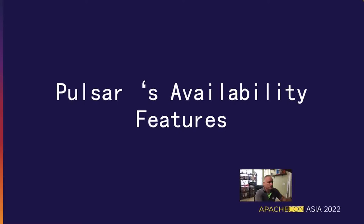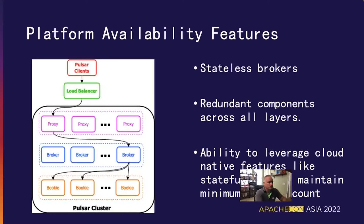Let's start with a quick review of all Pulsar's availability features already available inside the platform prior to the 2.10 release. Pulsar's multi-tiered design makes it highly available by default. We completely decouple the serving and storage layers. By separating these two layers, this allows Pulsar brokers to be 100% stateless. Consequently, any broker can serve data from any topic by reading that data from a separate storage layer instead of on local disk, unlike many other messaging systems such as Apache Kafka. Stateless brokers that fail can be easily replaced with new broker instances without any additional setup processes required.